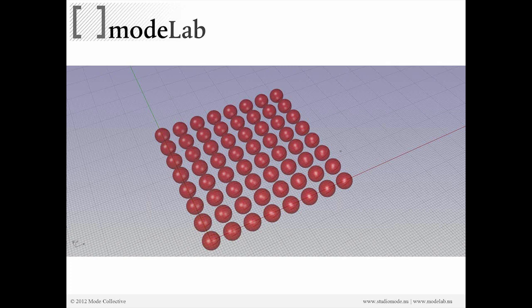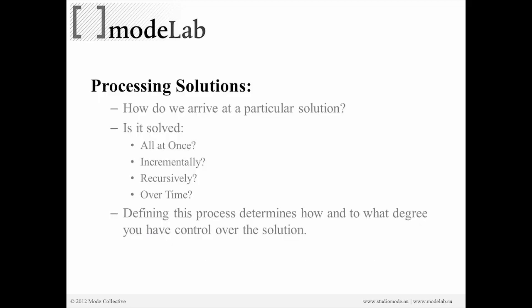We're going to create an array of sphere objects using the GH Python object in Grasshopper. As we start to create multiple objects using scripts inside a parametric environment, we have to begin talking about how exactly we're asking the computer to process the tasks we're giving it — how does it process the solution?